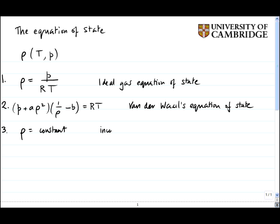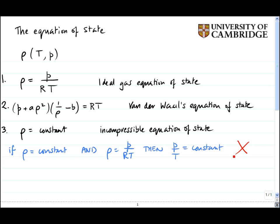I shall call this the incompressible equation of state. Students often come up with this argument: they say that if rho equals a constant and rho equals P over RT, then as a consequence P over T must equal a constant. They then work out the temperature field for a given pressure field. This is completely wrong, although I see it every year.